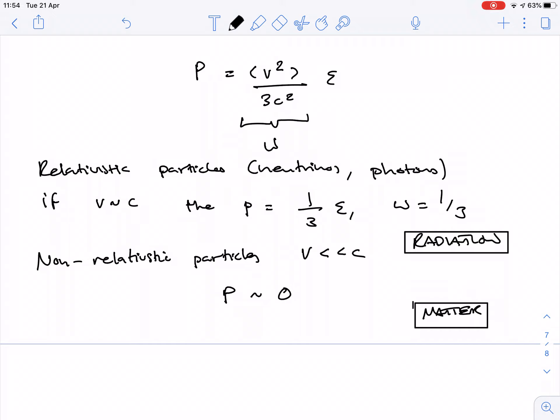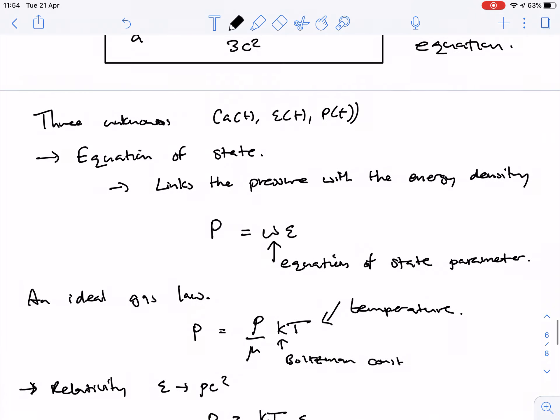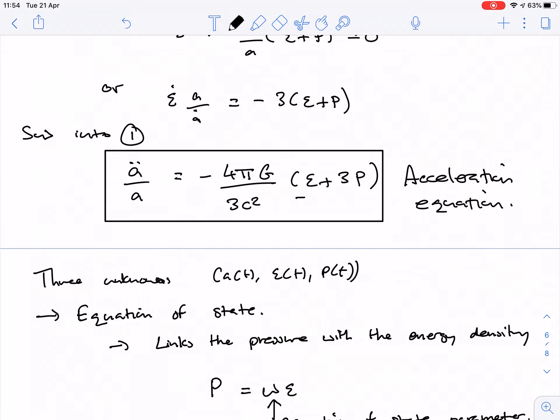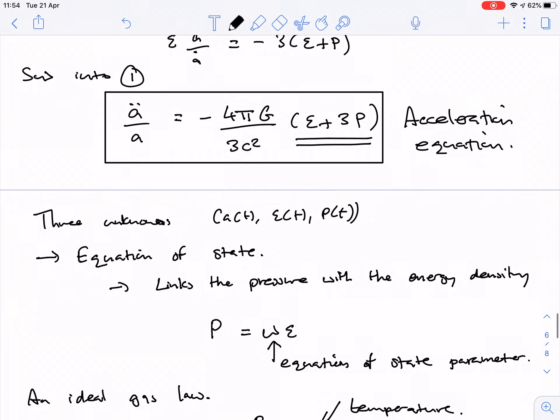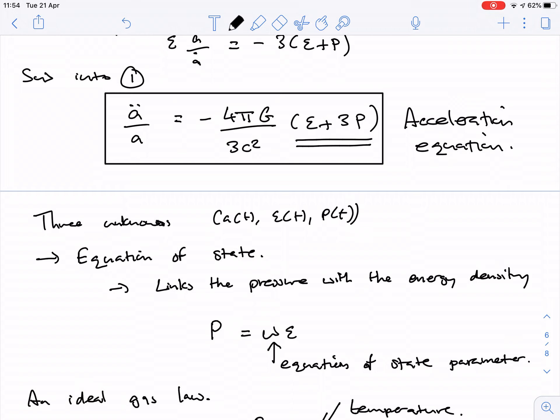But there are some other interesting features that you can see as well. You can write an equation of state parameter. You can write any number you like. But, for example, if I look at the acceleration equation, and I look at this e plus 3p. So if I have a situation where I have e plus 3p being positive, the energy density and the pressure are positive, then the acceleration will be negative. The universe will be slowing down. If I can make the 3p term negative, then I can make a universe that accelerates.